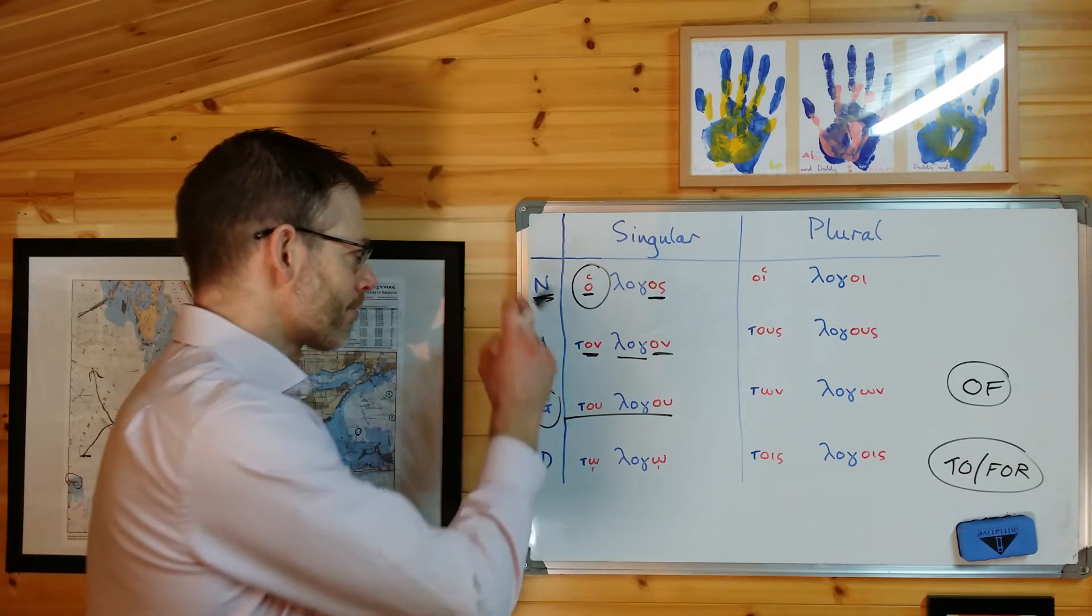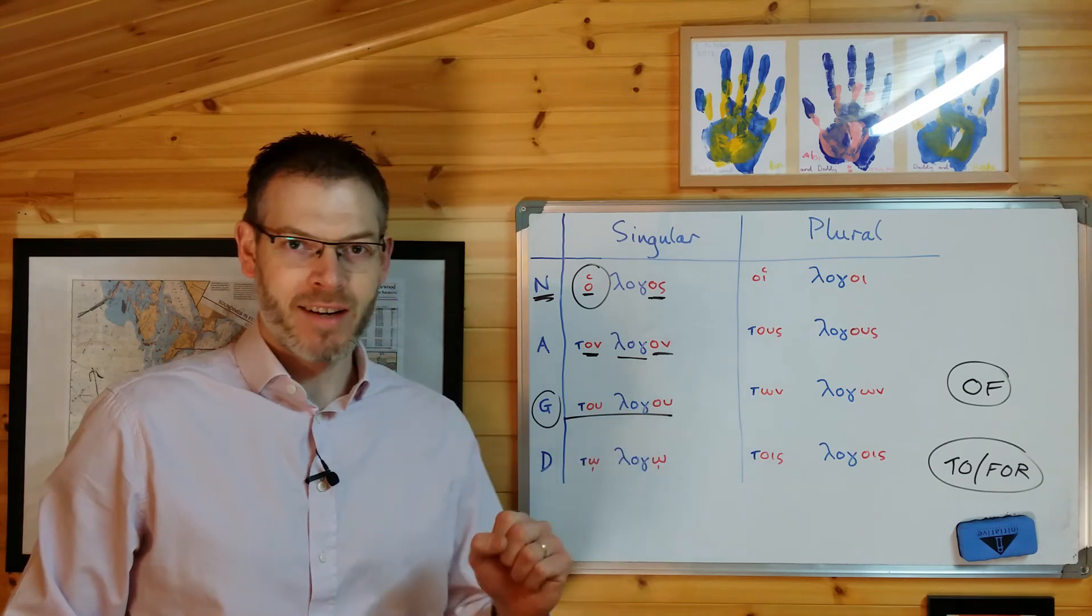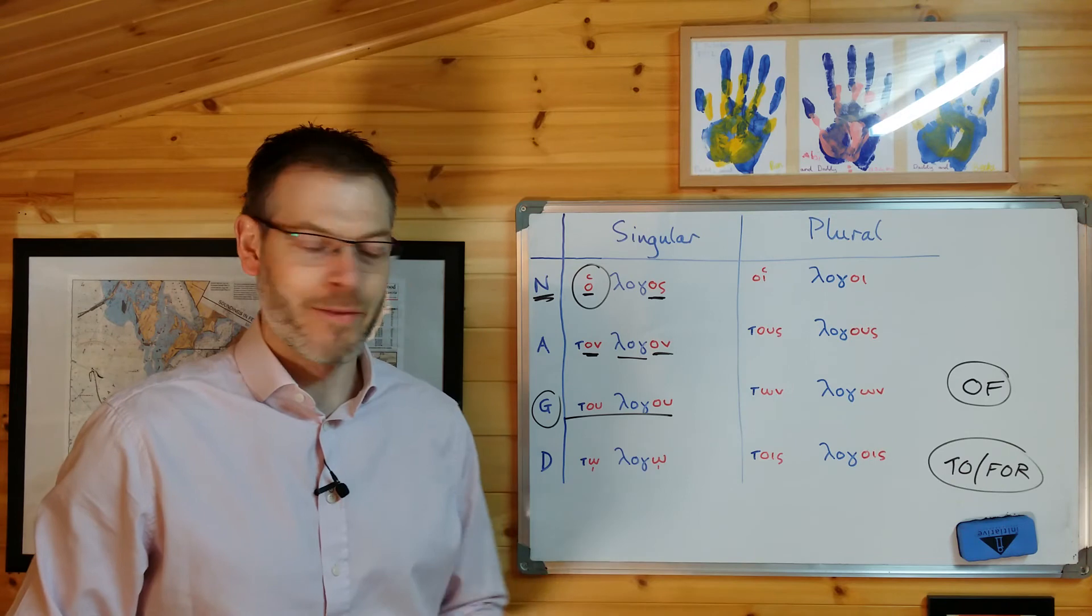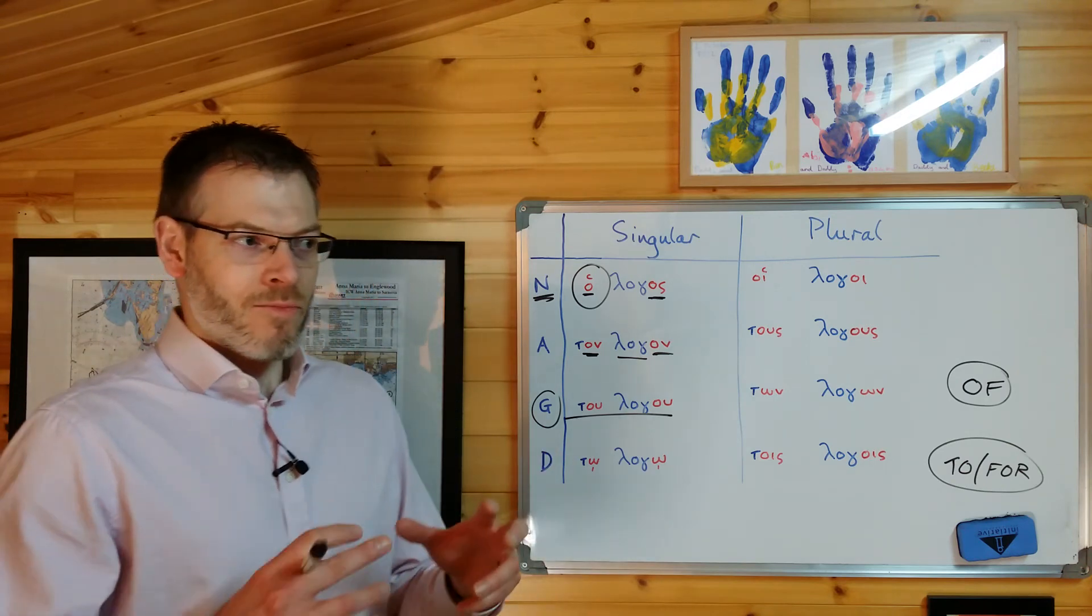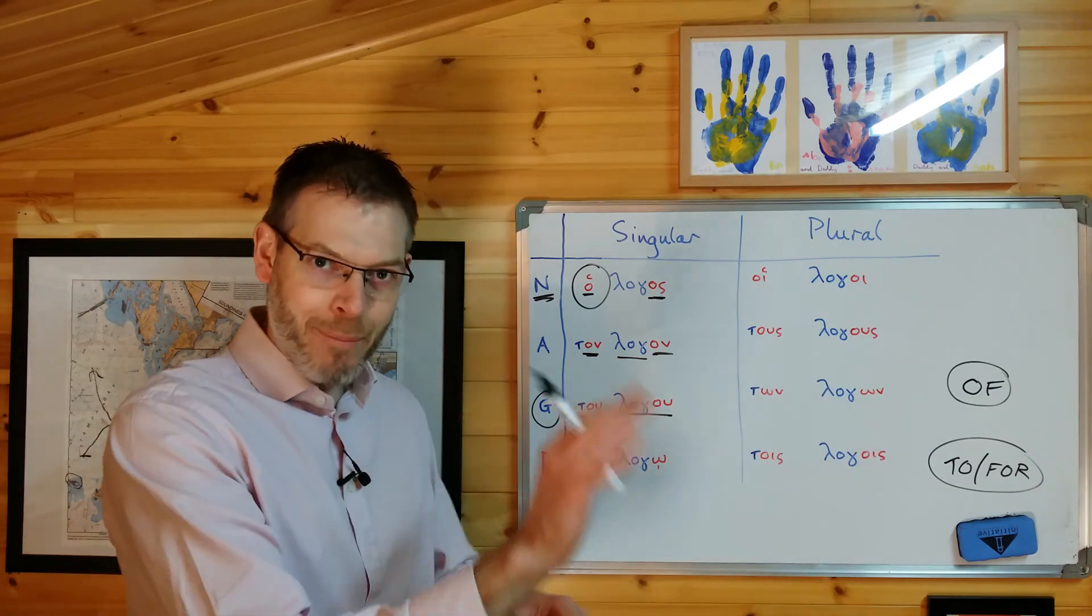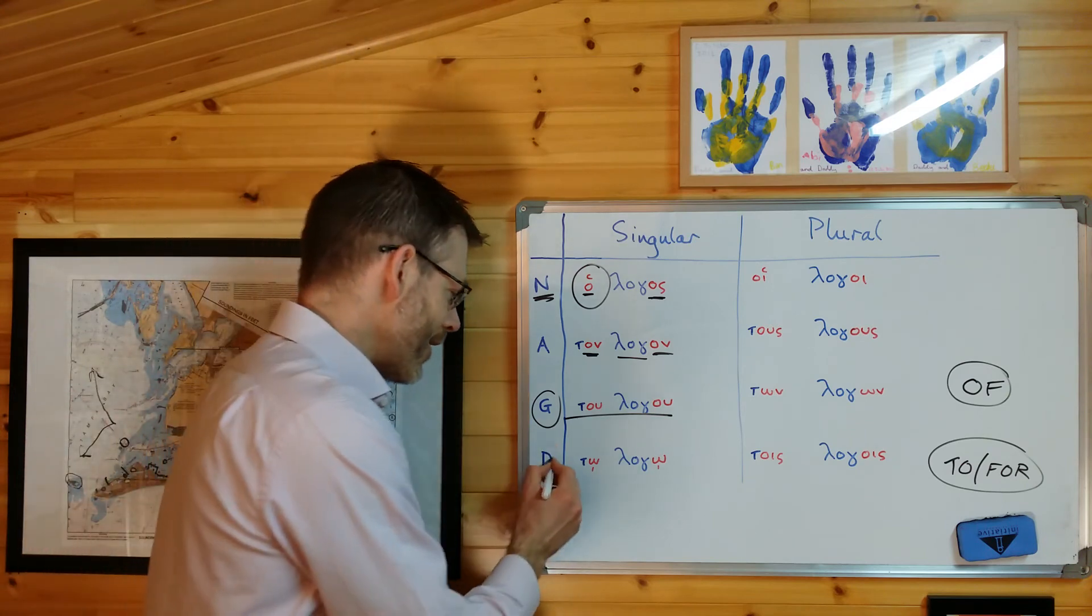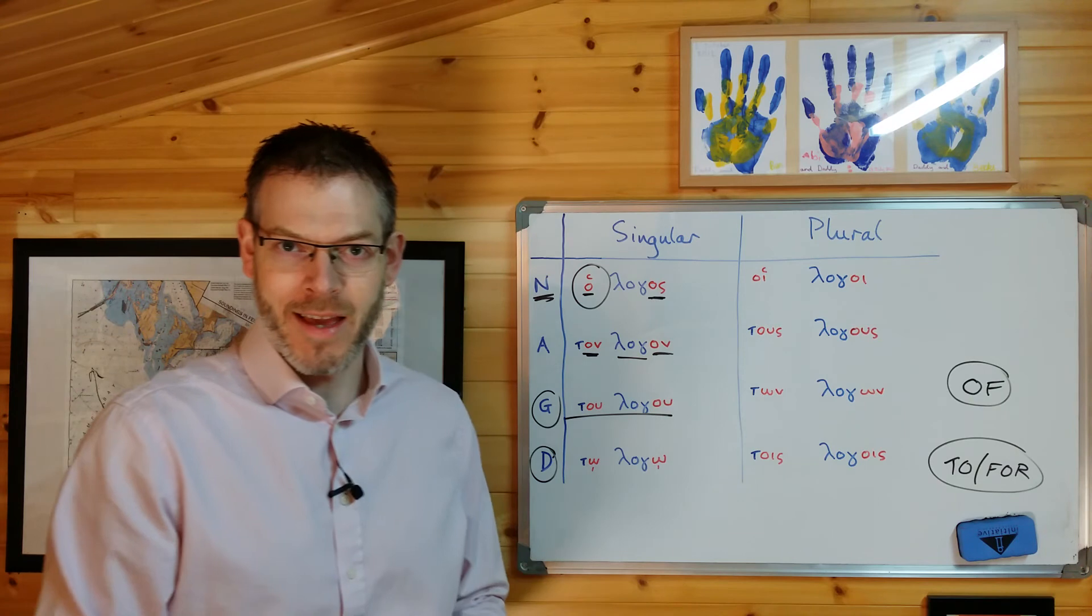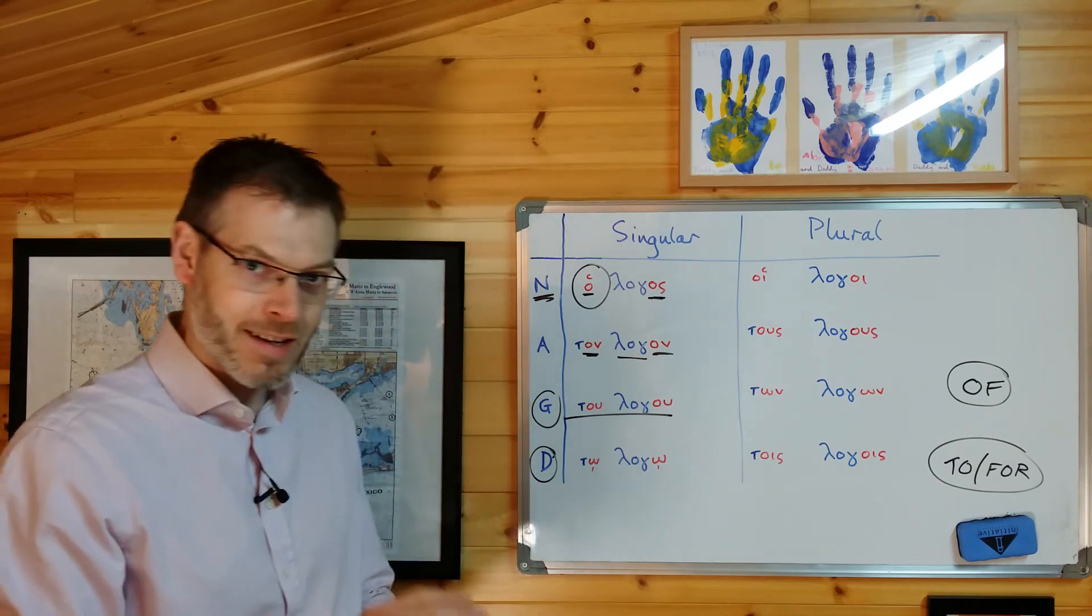So just a reminder, nominative is a little label telling you this thing is the subject of the verb. Accusative, that's a little label telling you this thing is the object of the verb. Genitive, that's a little label which tells you that it's of this thing, of this thing. So you just slap of in front of it, and then write it out. Dative is a little label telling you it's to or for this thing. So when you're translating it from Greek into English, just write to or for, and then translate it.